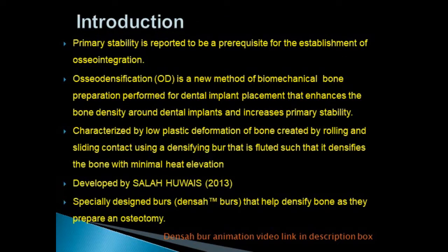Primary stability in implant placement is one of the most critical factors determining the outcome of implant therapy, and it is reported to be a prerequisite for the establishment of osseointegration. The key factors that enhance primary stability are density of bone, the surgical protocol, implant thread type and geometry. There are many surgical techniques developed to increase primary stability, and osteodensification is one such technique — a method of biomechanical bone preparation performed for dental implant placement to improve primary stability by enhancing bone density.